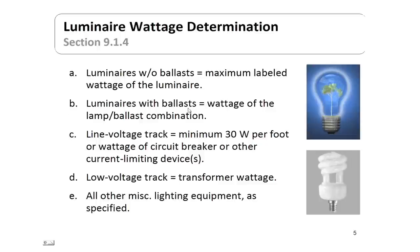If you have luminaires with ballasts, as are most fluorescent fixtures, you simply use the wattage of the lamp-ballast combination. For track lighting, use line voltage track at a minimum of 30 watts per foot, or you can use the wattage of the circuit breaker or other current-limiting device. For low voltage track lighting, use the transformer wattage, and for all miscellaneous lighting equipment, simply use the light wattage as specified.